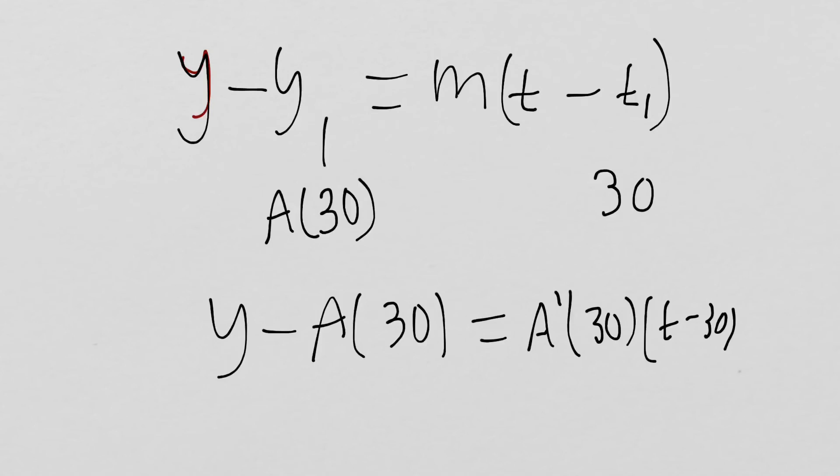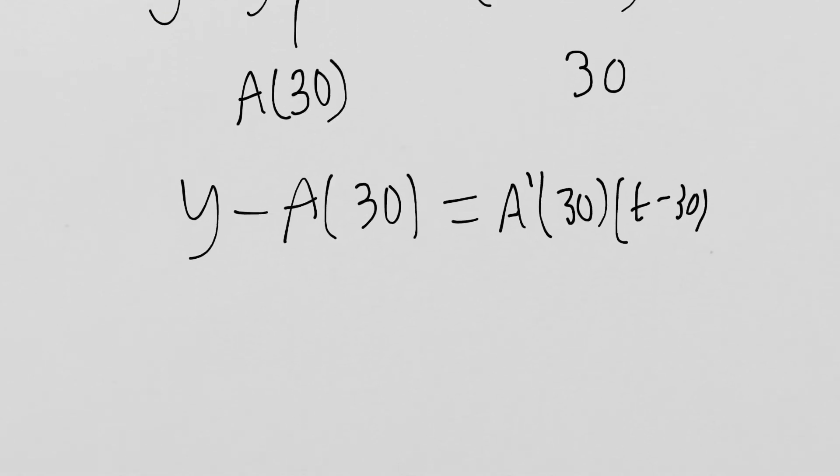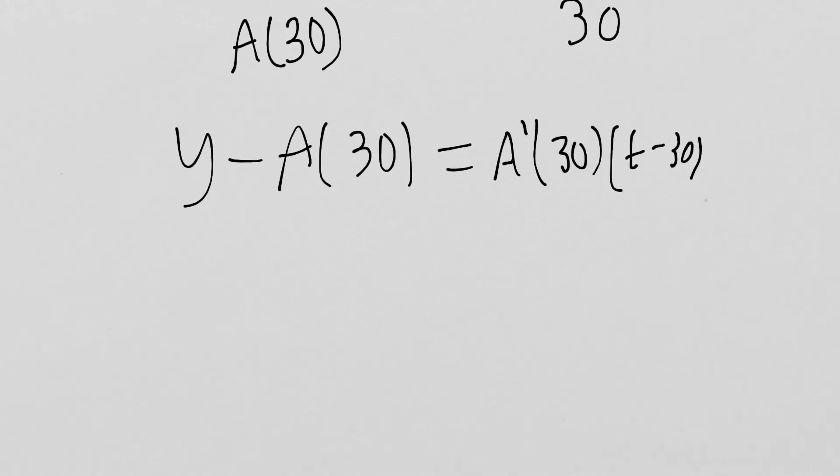We need to fill these values in. To avoid rounding errors, we should find out what A(30) and A'(30) are and store them in our calculator. A(30) equals—we just need to plug this directly into our function—that's going to be equal to 0.782928.